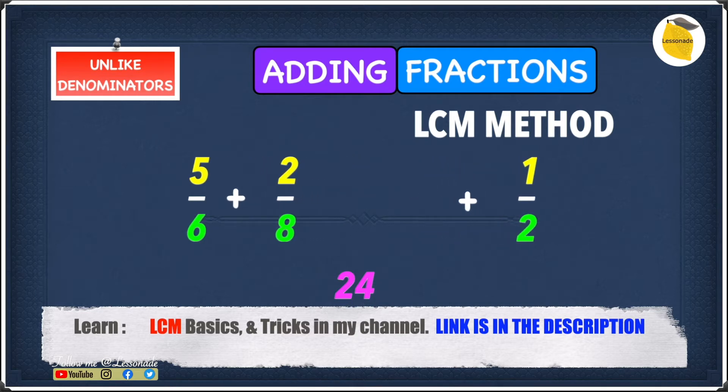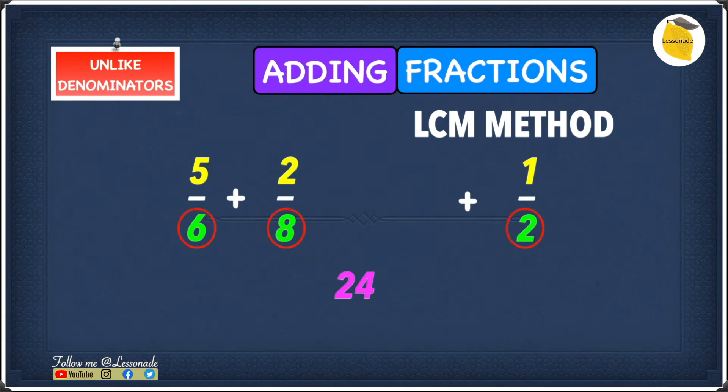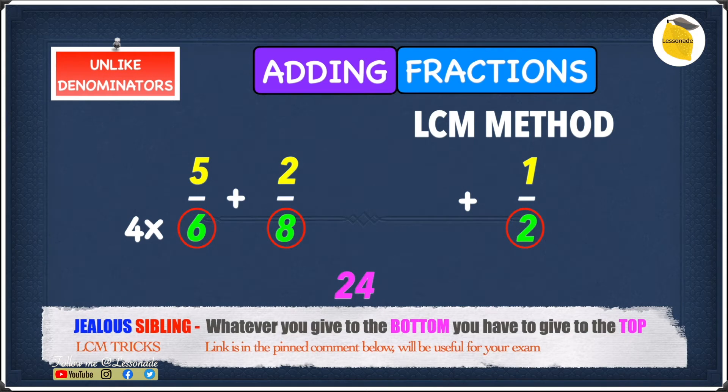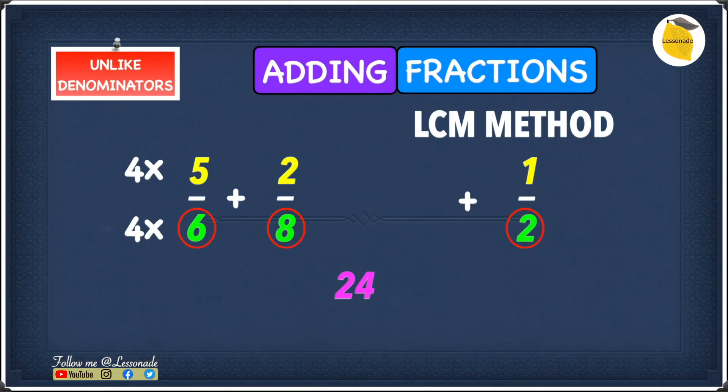The next thing we're going to do is see what number we have to multiply the denominators by to get 24. We have to multiply 6 by 4 to give us 24 because 6 times 4 is 24. If you remember we said before that whatever you do to the bottom number you have to do to the top number. So if you multiply the bottom number by 4 you multiply the top number also by 4. We know that 6 times 4 will be 24 and we also know that 5 times 4 will be 20. So this means we get an answer of 20 over 24.